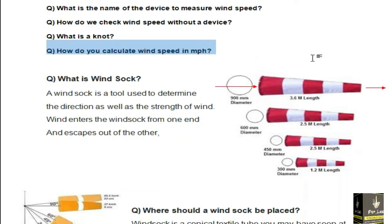What is windsock? Windsock is basically a tool used to determine the direction as well as strength of the wind. Wind enters from one end and escapes out to the other. It is a conical type of textile cloth made so that wind enters from this direction and out from this direction.